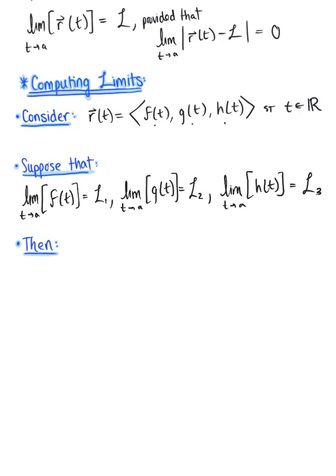So if these three individual limits exist, then the full limit can exist. Then we're able to say that the limit as t is approaching a of vector r(t).